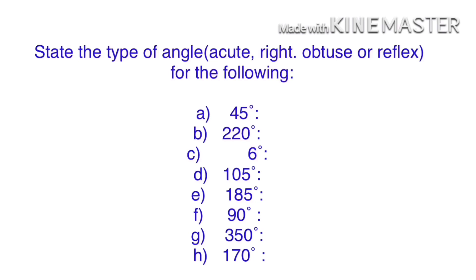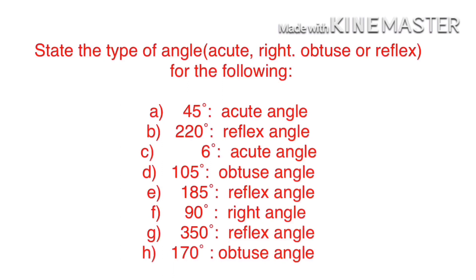Now let us see the answers. If an angle is 45 degrees, it is called an acute angle. If an angle is 220 degrees, it is a reflex angle. 6 degrees lies between 0 and 90, so it is an acute angle.